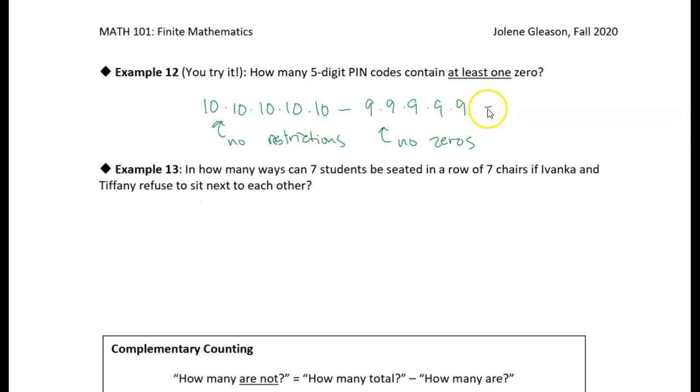And then we can just subtract the two, and what I get when I do that, I get 40,951 PIN codes that we could create with at least one zero. All right, I will meet you for the next video.